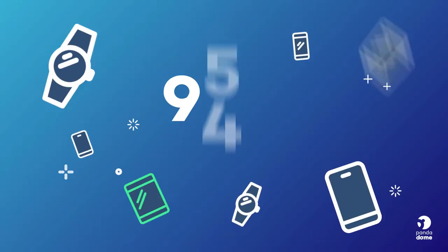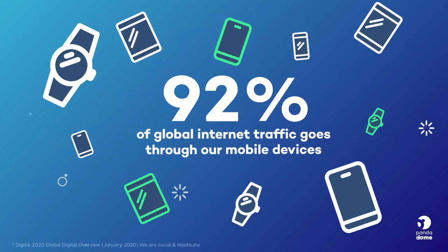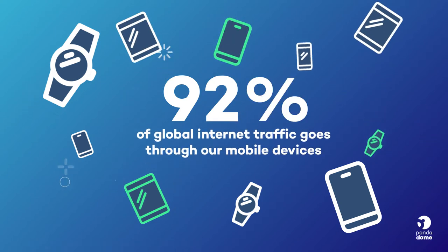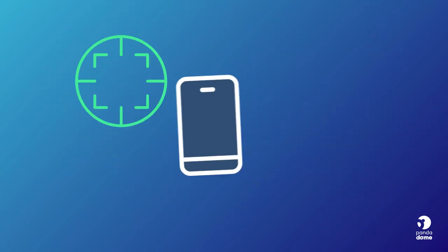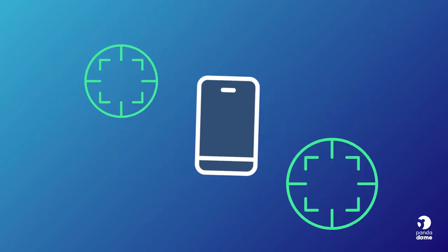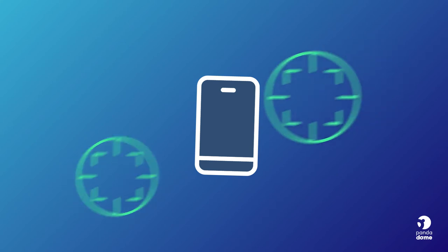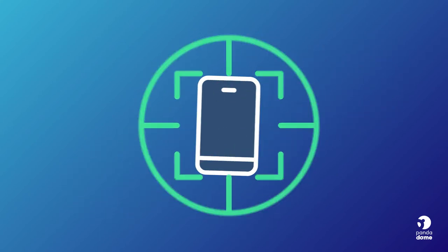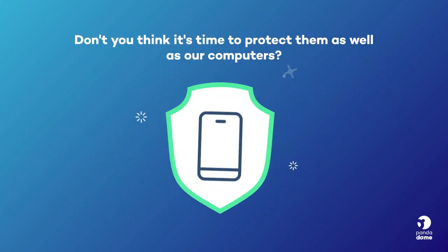PandaDome for Android. 92% of global internet traffic goes through our mobile devices. Mobiles are therefore also vulnerable to attacks from viruses and malicious software, which affects our privacy and security. Don't you think it's time to protect them as well as our computers?